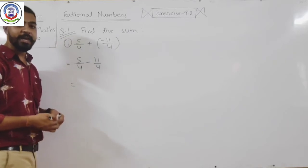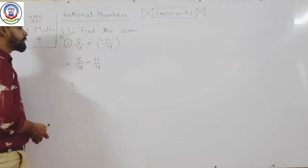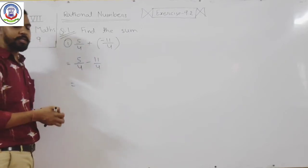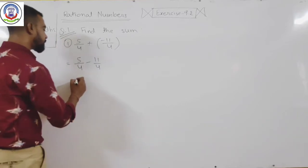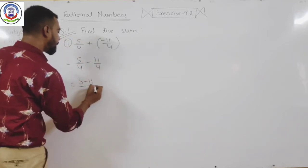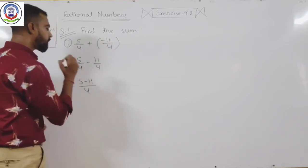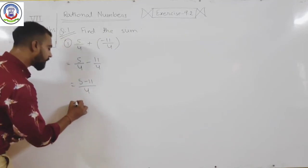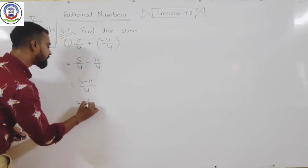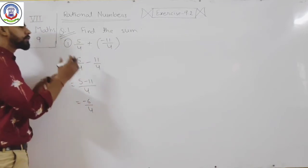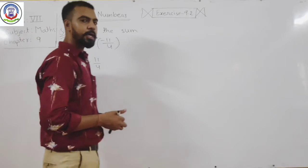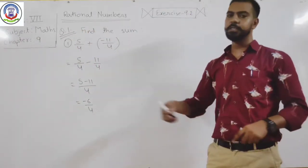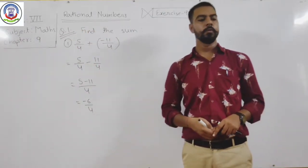So the sum of these two rational numbers is minus 6 upon 4.